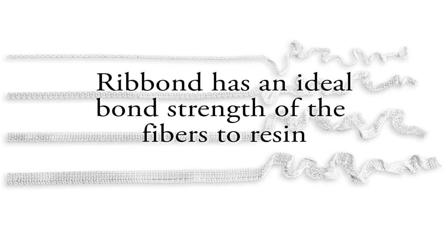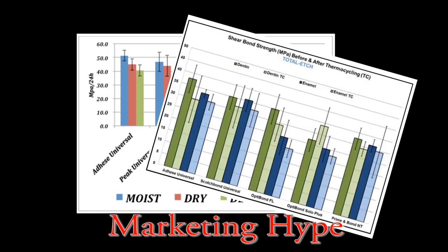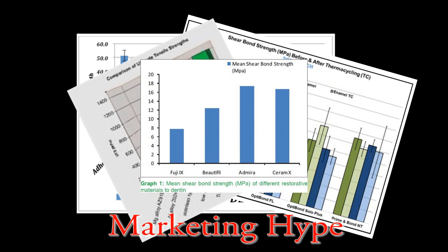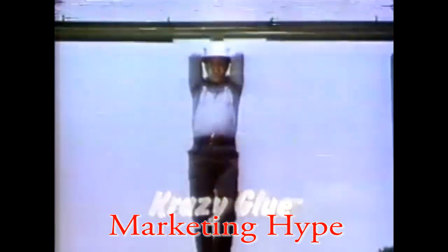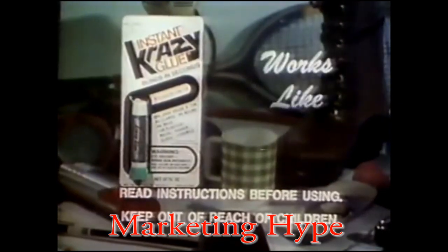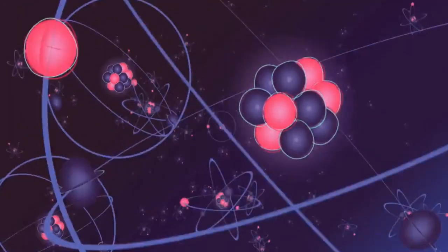Ribond has an ideal bond strength of the fibers to resin. Marketers of glass fiber reinforcements suggest that high bond strengths of glass fibers to dental resins is a positive feature. These marketers take advantage of the fact that people in the dental industry generally equate high bond strengths with better clinical results. Although high bond strengths are desirable for bonding resin to teeth, counter-intuitively, this is not true for fiber reinforcements.